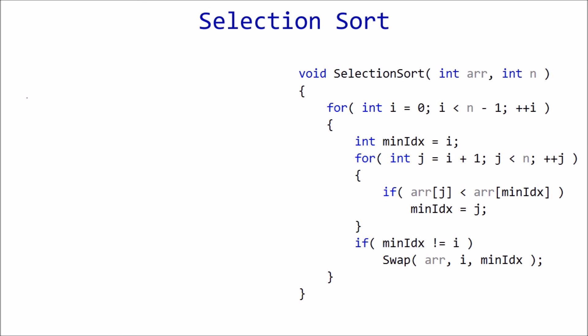The statements in the inner loop execute n minus 1 times for i equals 0, n minus 2 times for i equals 1, n minus 3 times for i equals 2, and so on. This turns out to be an arithmetic progression, which equals n times n minus 1 over 2.